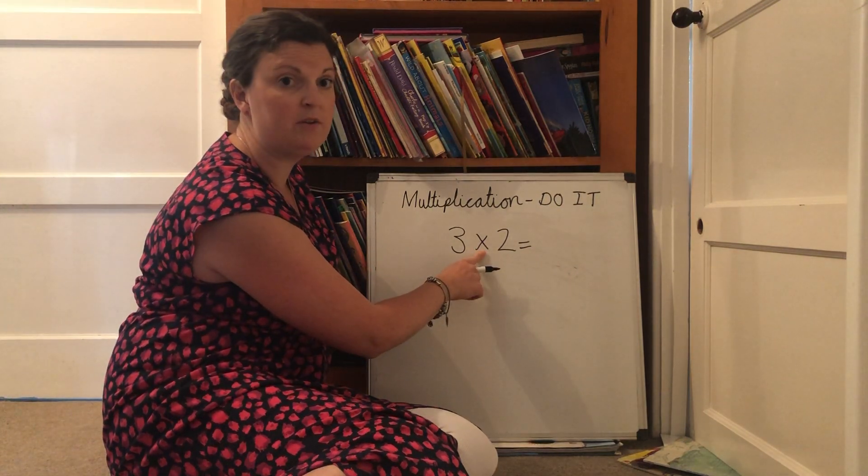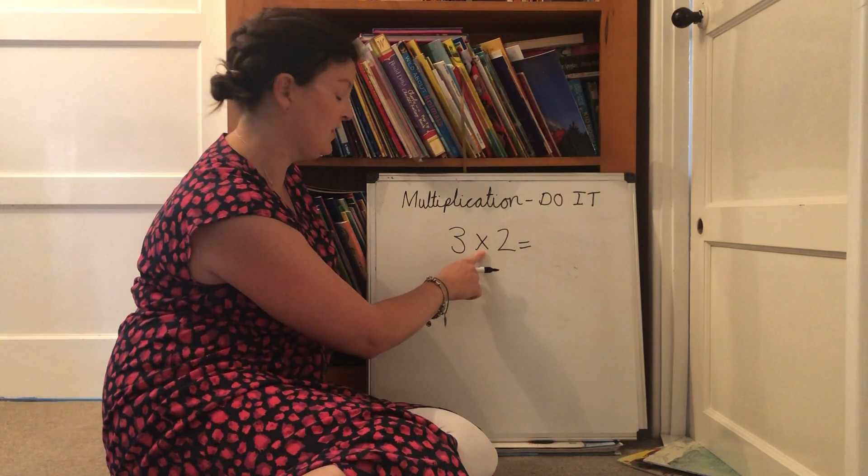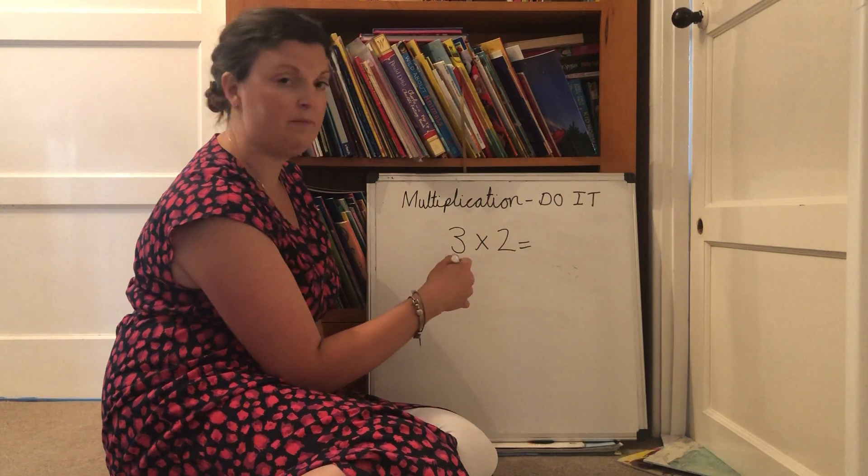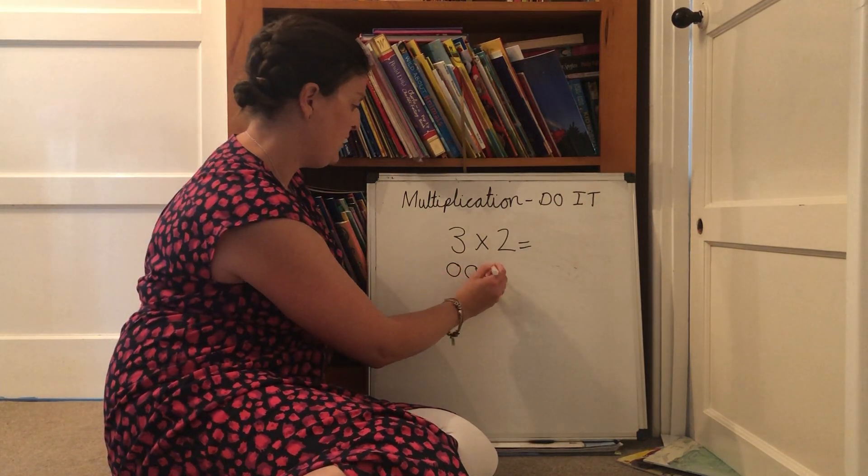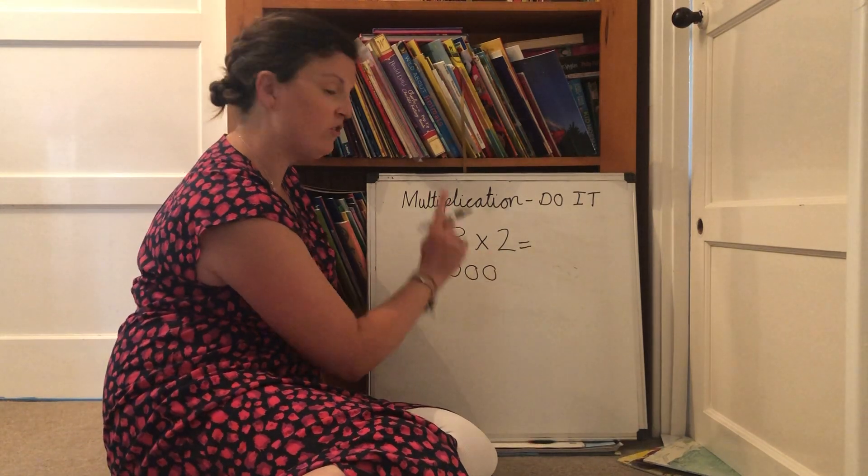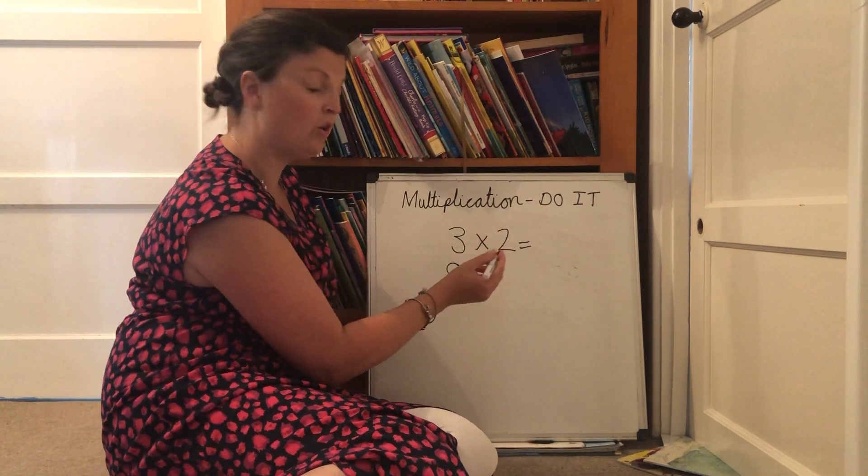Remember to have this on its side because otherwise it will look like an add sign. It's really important. And then I'm going to draw my array to help me. So one, two. That's one lot of three but I haven't got one lot. I've got two lots of three.